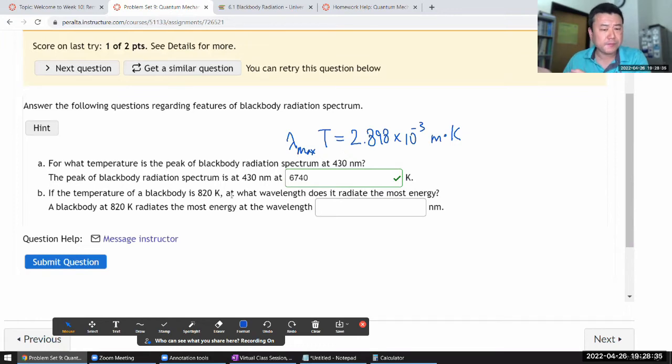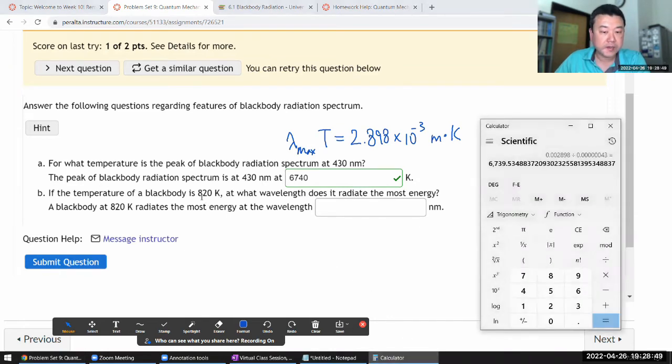If the temperature of a blackbody is 820 Kelvin—that's kind of a moderately hot thing, like household ovens, but not as hot as a red glowing thing—at what wavelength does it radiate the most energy? Okay, so it's the opposite version: we are given the temperature and asked for wavelength. So we'll take the constant 2.898 times 10 to the power of minus 3 and divide by the temperature 820.